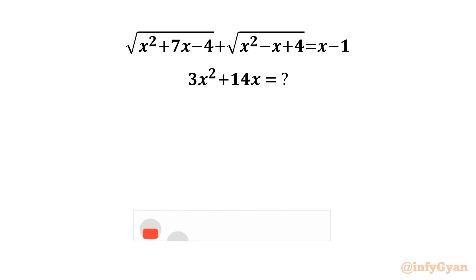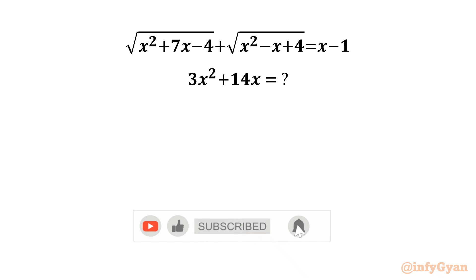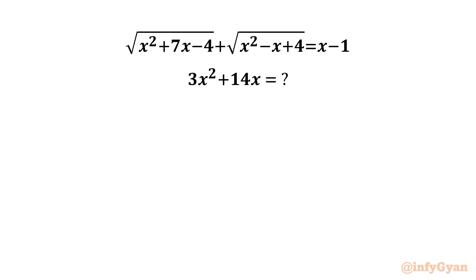Welcome to Infigyan friends. Today in this video we have a very interesting question from algebra. We have square root of (x² + 7x - 4) plus square root of (x² - x + 4) equal to x minus 1. We need to find the value of 3x² + 14x. So let us get started.